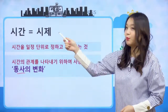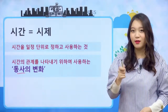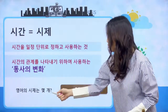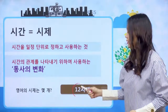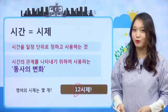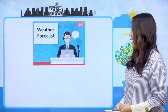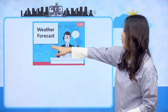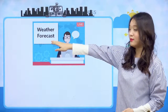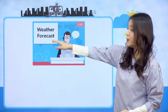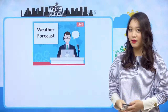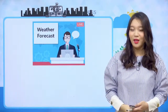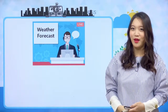우리 시제는 몇 개가 있었어요? 영어의 시제는 총 12시제가 있다라고 이야기를 했었죠. 여기 그림 보니까 weather forecast라고 적혀 놓았는데 weather forecast는 우리나라 말로 하면 일기 예보입니다. 우리 일기 예보 한번 들어볼까요?